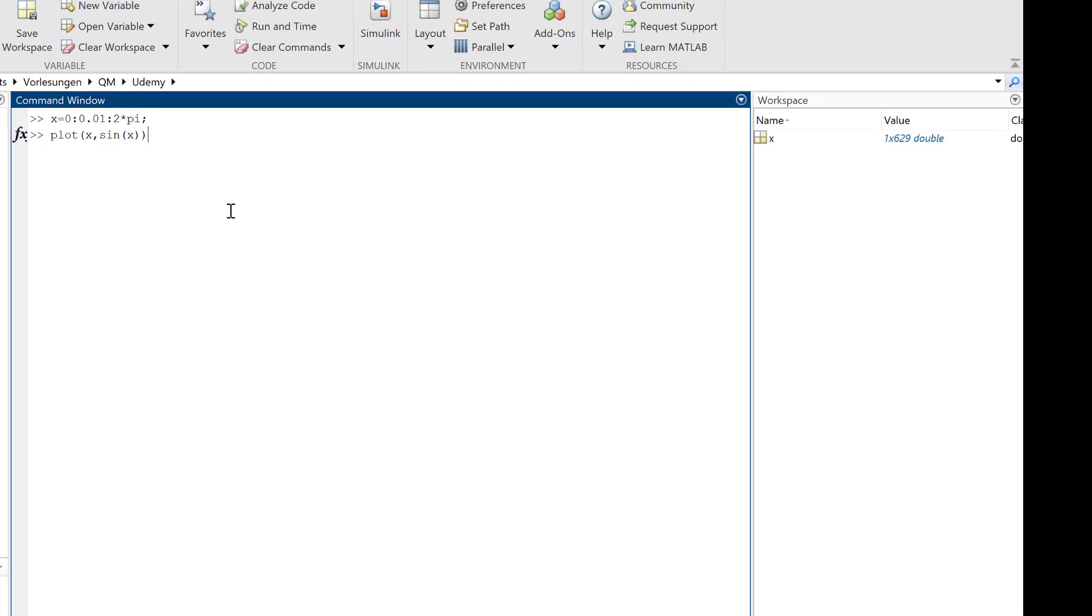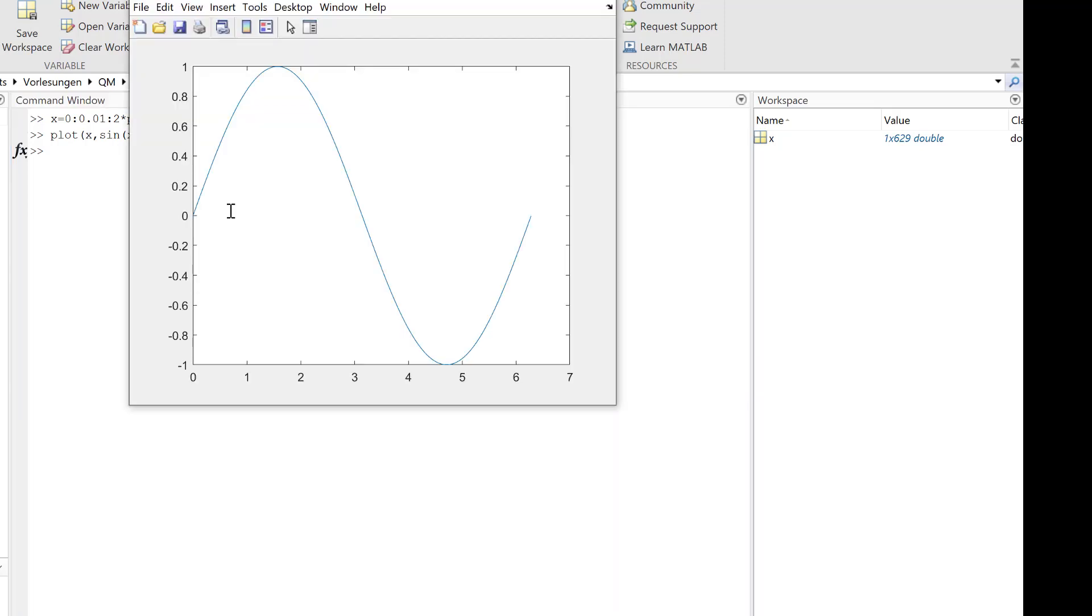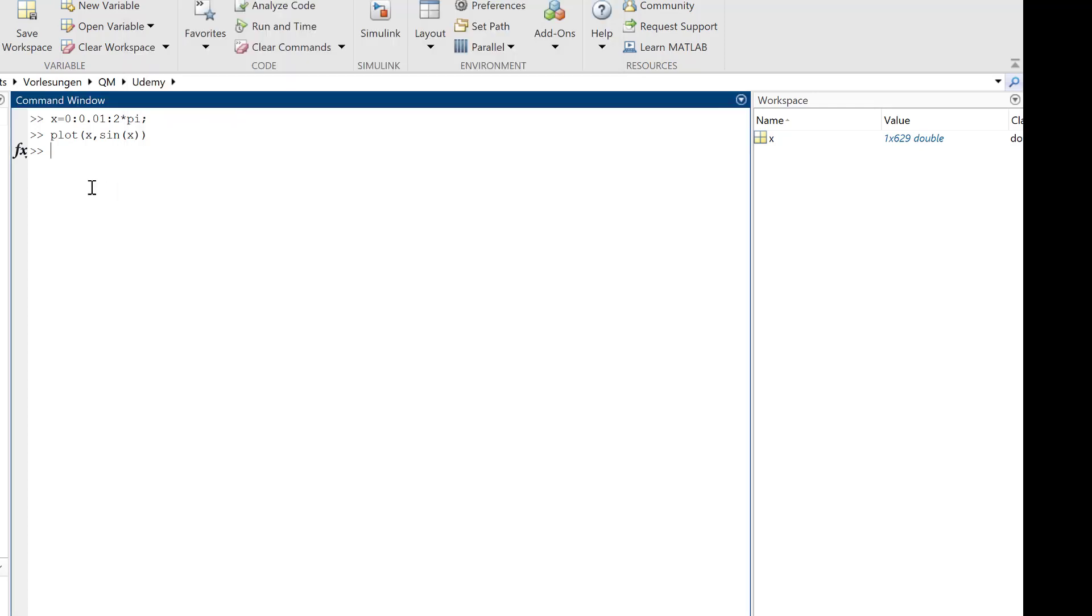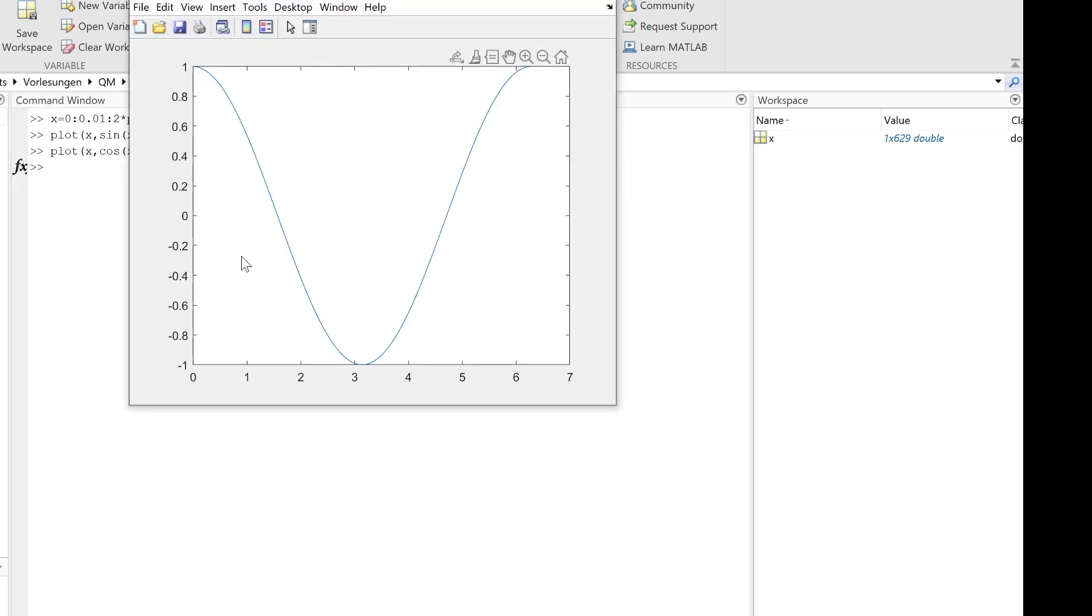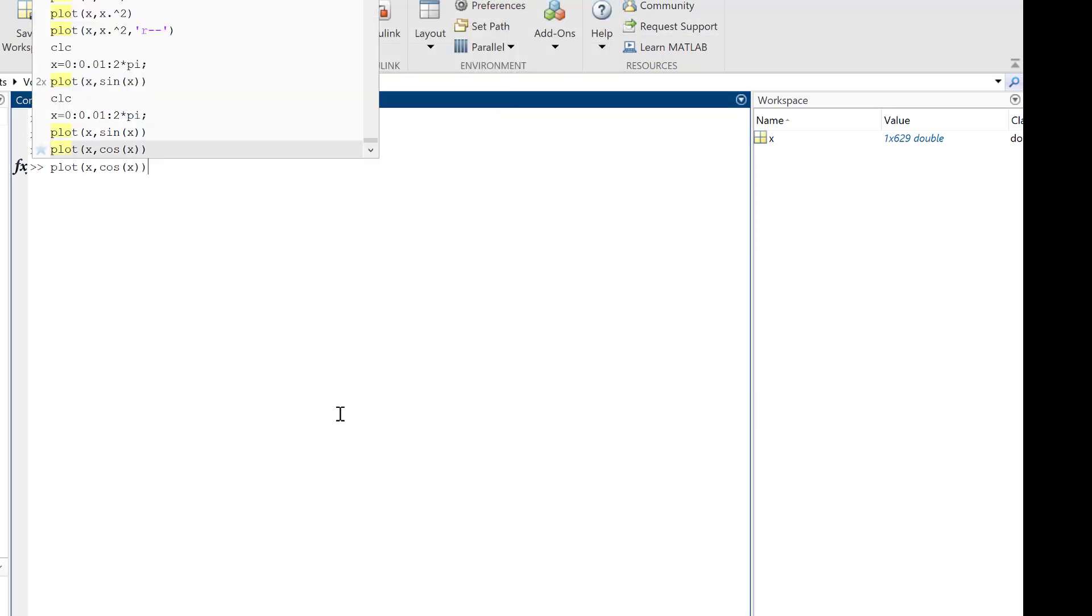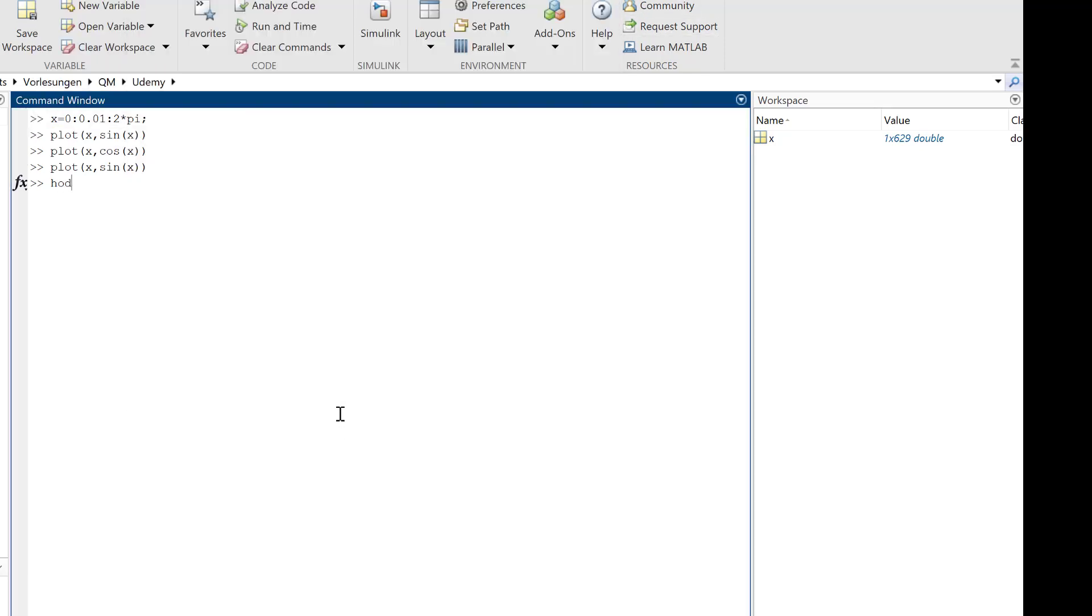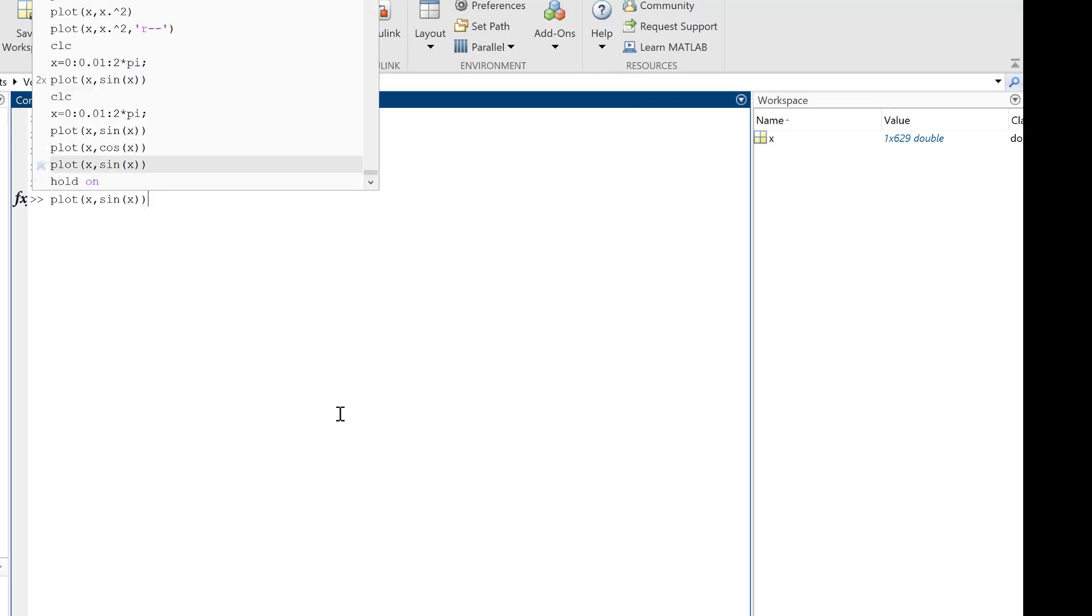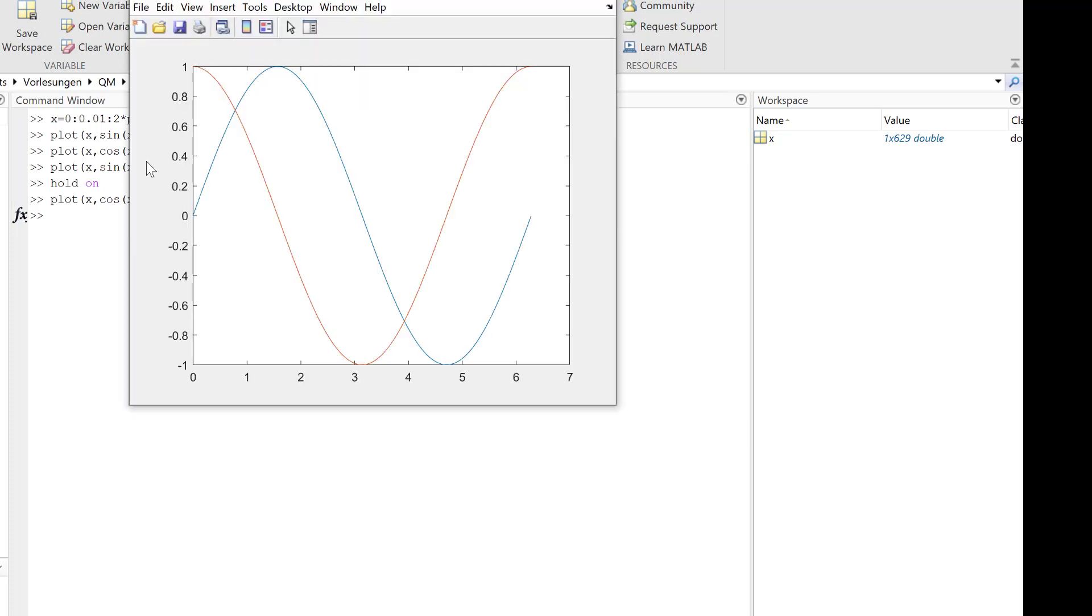I've already created vector X from 0 to 2π. Now I plot the sine - here's the sine plot. If I plot cosine without hold on, the sine is gone. So what do we do? Plot sine first, write hold on, then plot cosine. Now you see both curves in one figure.